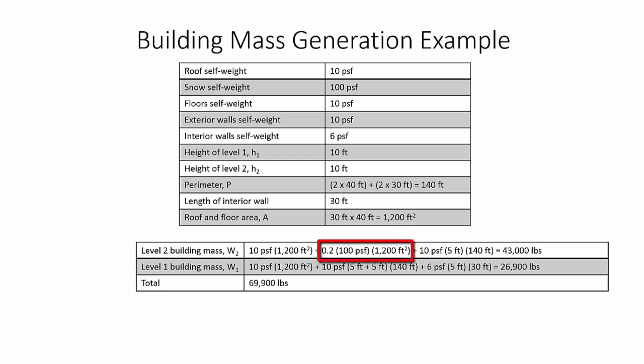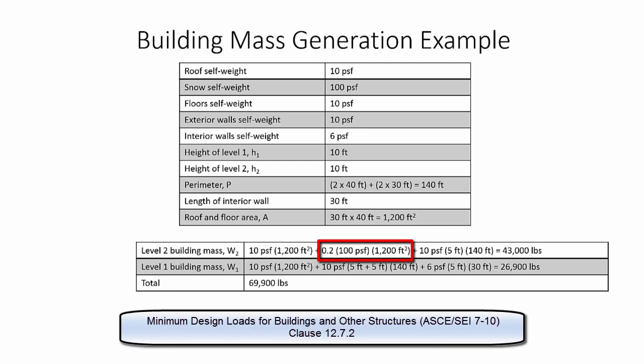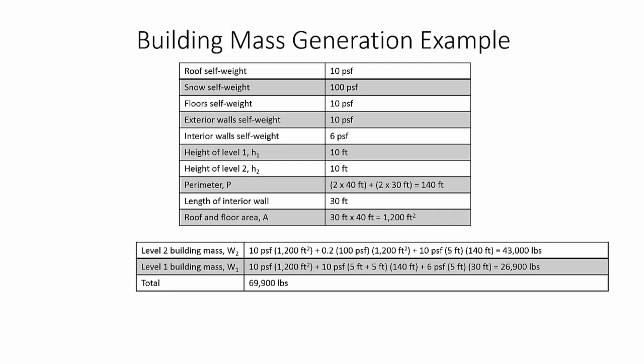Since the roof snow load exceeds 30 pounds per square foot, only 20% of it is taken according to the ASCE 7 clause, and then multiplied by the roof area. Next, since the last level wall height is 10 feet, half is 5 feet, and it is multiplied by the perimeter and self-weight of the exterior walls. All of this summed together gives the building mass for Level 2.